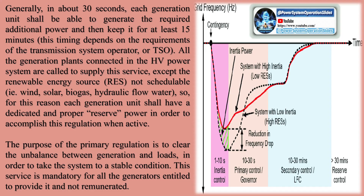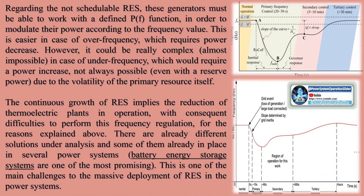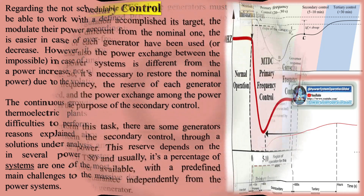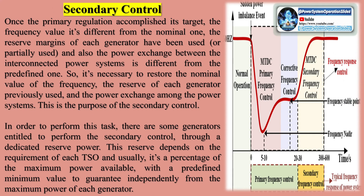When an imbalance between generation and load occurs, the frequency of the power system changes. For example, with a load increase, the generated power doesn't immediately change, so the energy to compensate for this load increase arrives from the kinetic energy of the rotating generators that start decreasing the velocity — this is called the inertial response. After this moment, the speed controller called the governor of each generator acts to increase the generation power in order to recover this speed decrease and try to clear the imbalance. Generally, in about 30 seconds, each generation unit shall be able to generate the required additional power and then keep it for at least 15 minutes. This timing depends on the requirements of the transmission system operator, or TSO.